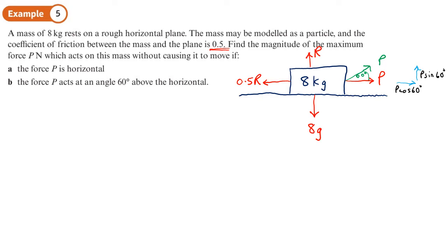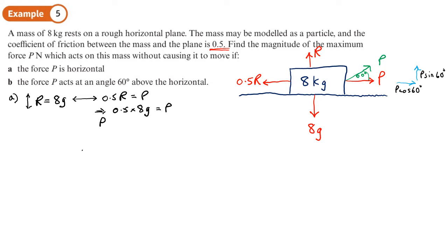Starting with part a, resolving vertically gives R equals 8g, and resolving horizontally gives 0.5 R equals P. Substituting R equals 8g, we get P equals 0.5 times 8g, which is 4g, or as a decimal 4 times 9.8 equals 39.2 newtons.